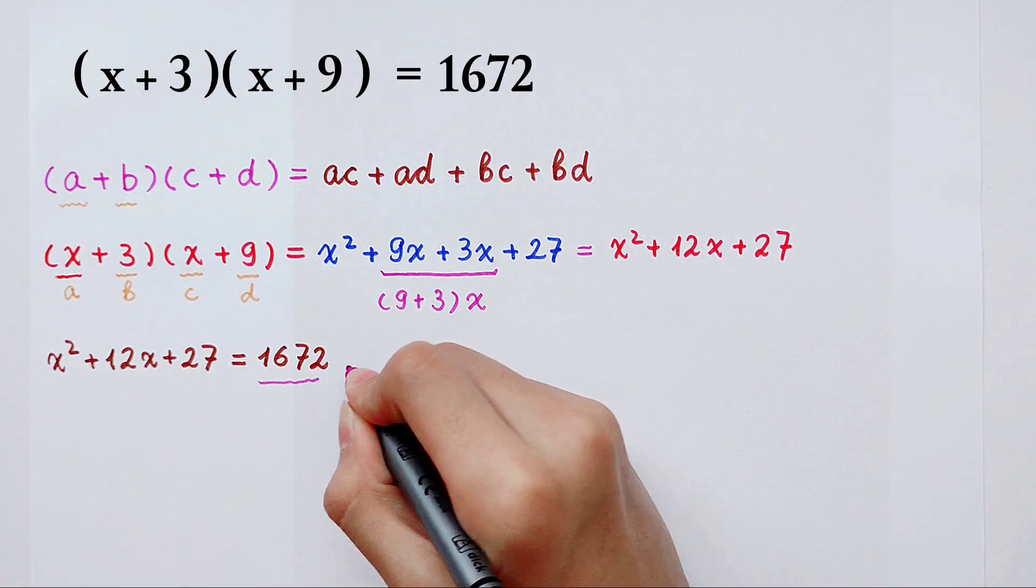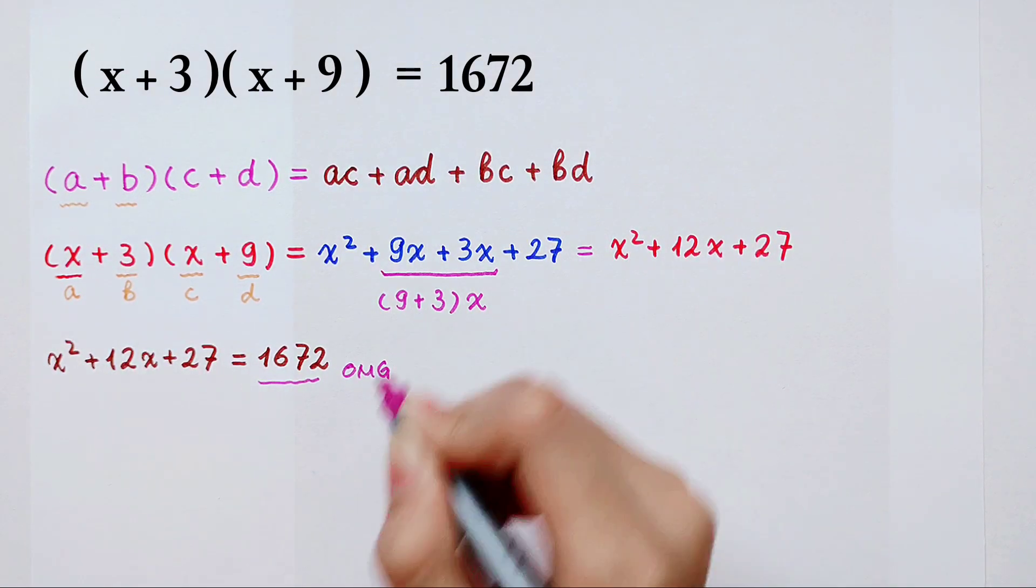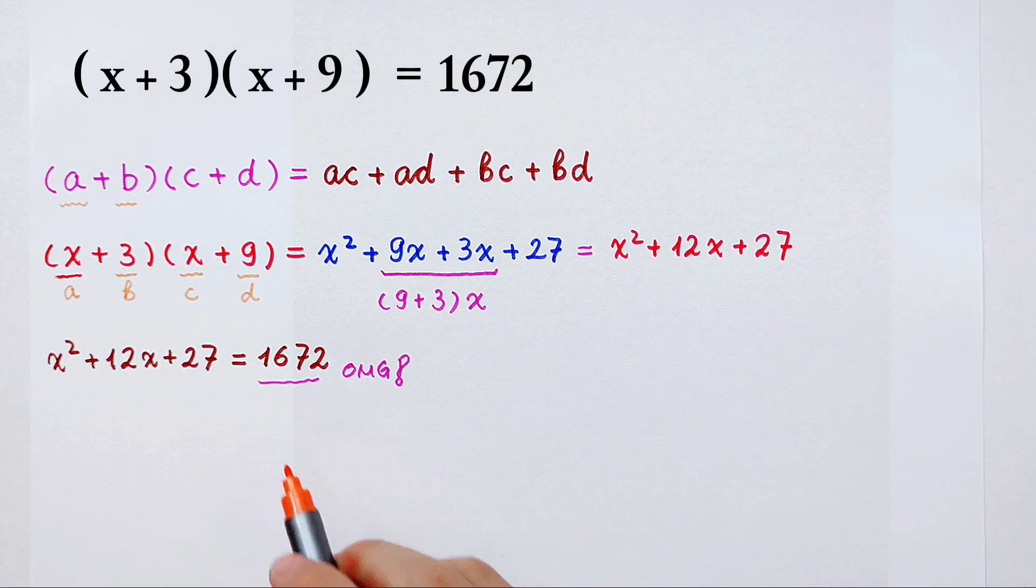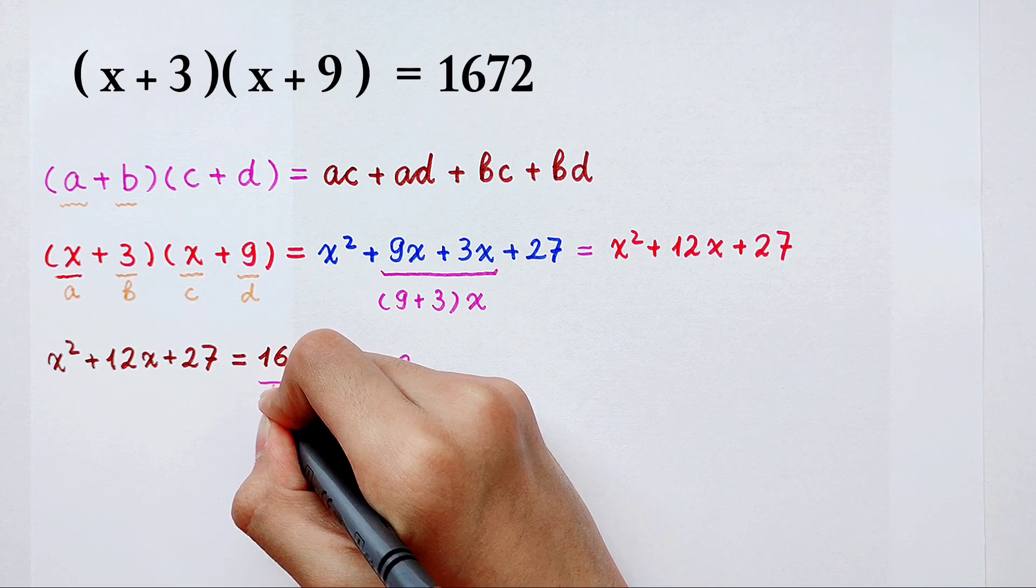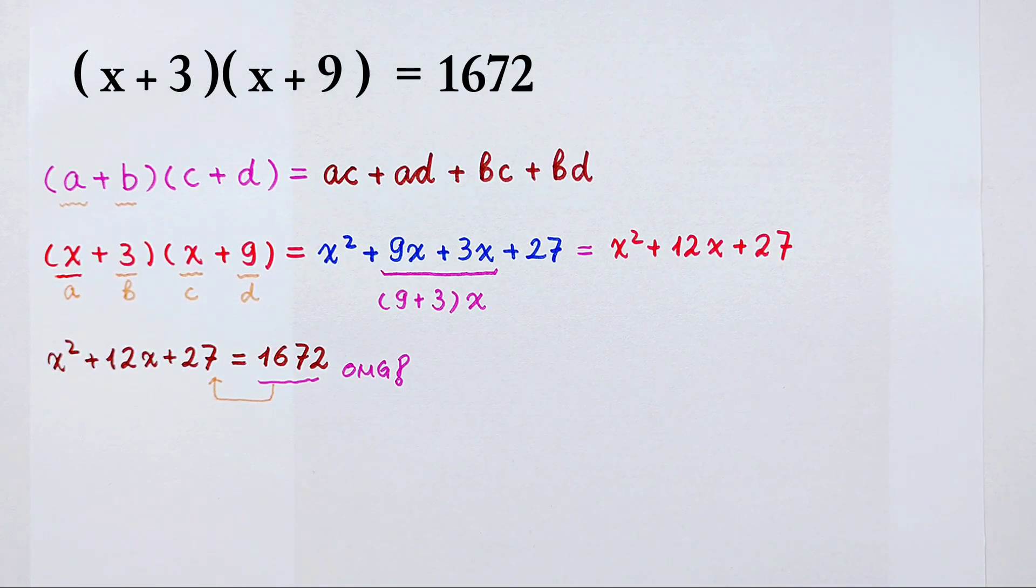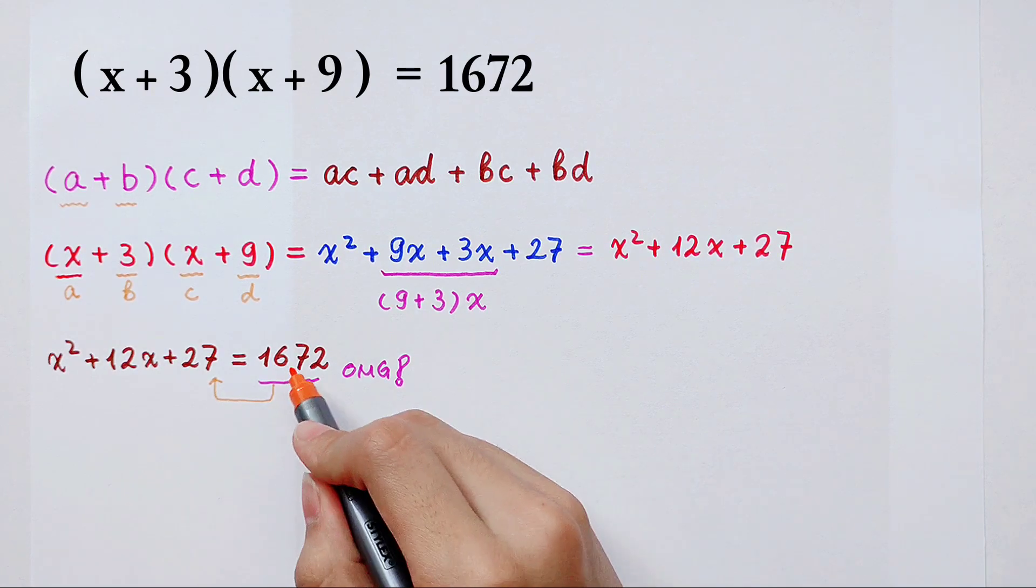So this number is very large. So now I'll move it to the left side. Move this to the left side. And then I'll write the right side. Become 0.